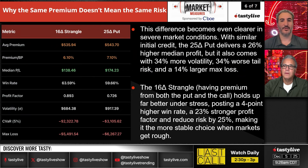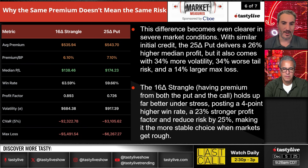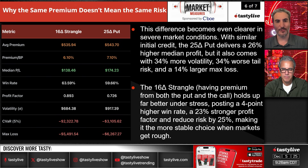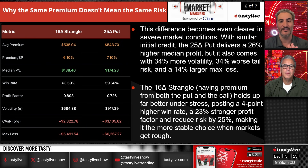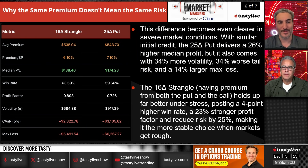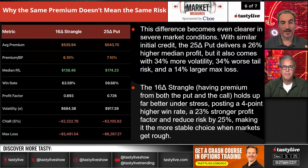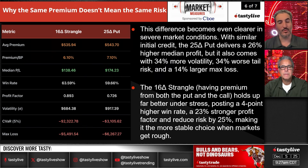The difference becomes even more clear in severe market conditions. With similar initial credits, the 25 delta put delivers a 26% higher median profit, but also comes with 34% more P&L volatility, 34% worse tail risk, and a 14% larger max loss. You have much wider CVAR and much wider peak-to-trough P&L when you're just doing one side of the trade.